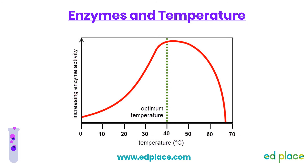After the optimum temperature, the rate of enzyme activity decreases. This is because as you increase the temperature, the bonds that hold the enzyme together start to break. This causes the shape of the active site to change and the enzyme becomes denatured. With a change in the shape of the active site, the lock and key theory no longer works because the substrate is no longer a complementary shape to the enzyme's active site. Therefore, no more enzyme-substrate complexes can form and the enzyme rate of reaction drops to zero. When enzymes are denatured, this is permanent and cannot be undone. You should always use the word denatured and never say an enzyme is killed or destroyed.